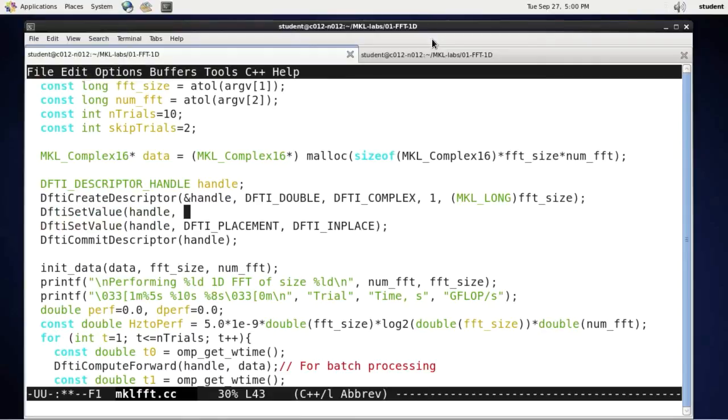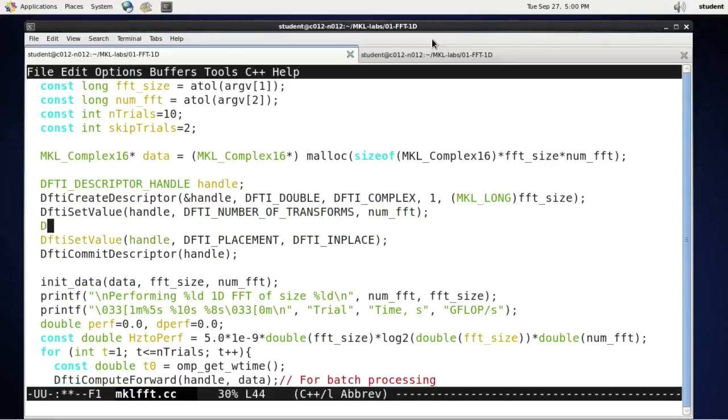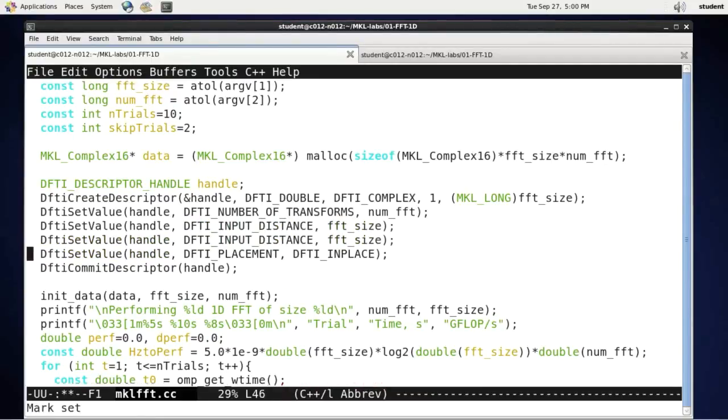The argument that I want to set is DFTI_NUMBER_OF_TRANSFORMS, and this number is equal to num_fft, in my case 200,000. And I also need to indicate how these transforms are packed into the single large array that I'm going to pass. So I need to specify DFTI_INPUT_DISTANCE, and they are packed this many elements apart, so I will set this to fft_size, and the same for output distance.